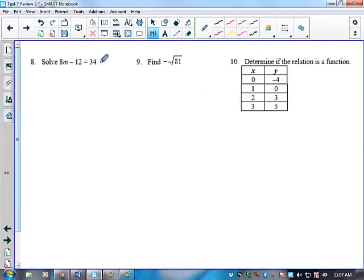All right, on 8, it wants us to solve for M. So I'm trying to get M by itself. I want it all by itself. So I'm going to move the farthest thing away that's on the same side, which is going to be this negative 12. The opposite of negative is a positive. And what I do to one side, I've got to do to the other. So I have 8M equals 34 plus 12 is 46.